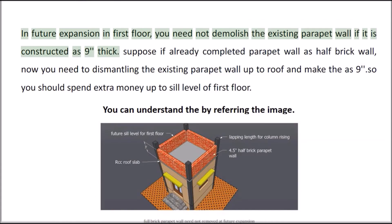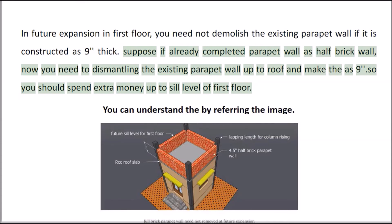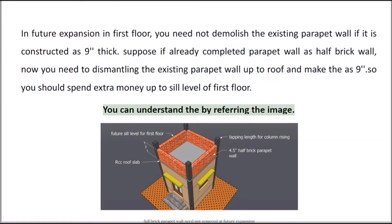For future expansion to the first floor, you need not demolish the existing parapet wall if it is constructed as 9 inches thick. Suppose the parapet wall was already completed as a half brick wall — you would need to dismantle the existing parapet wall down to the roof level and rebuild it to 9 inches. So you would spend extra money up to the sill level of the first floor, as you can understand by referring to the image.